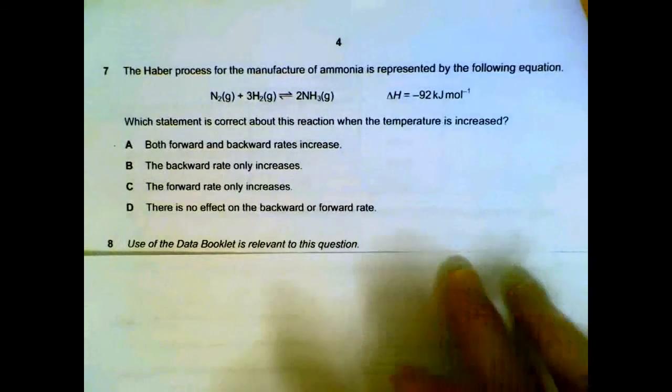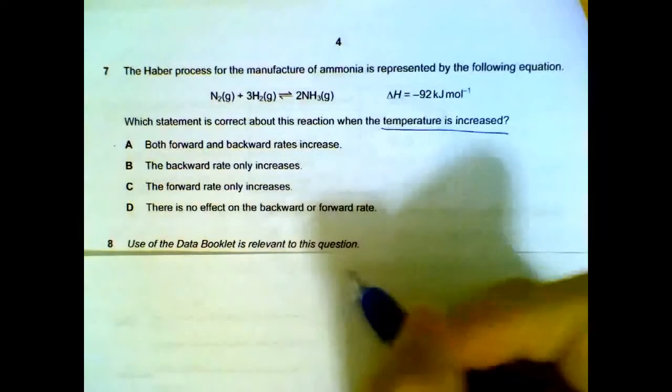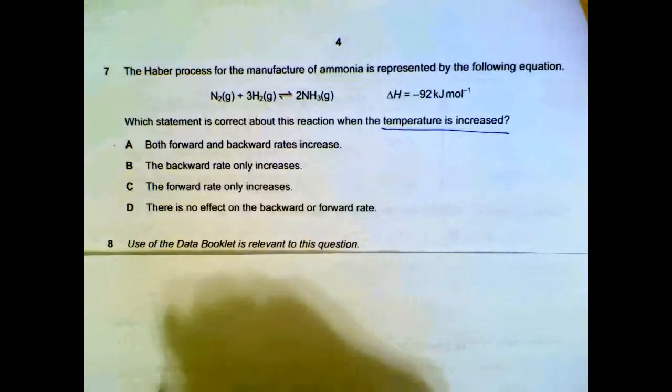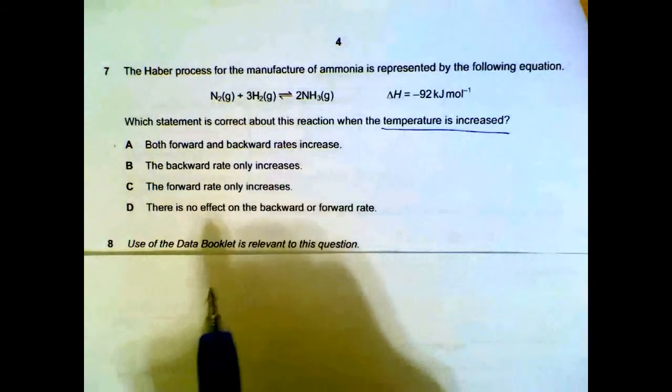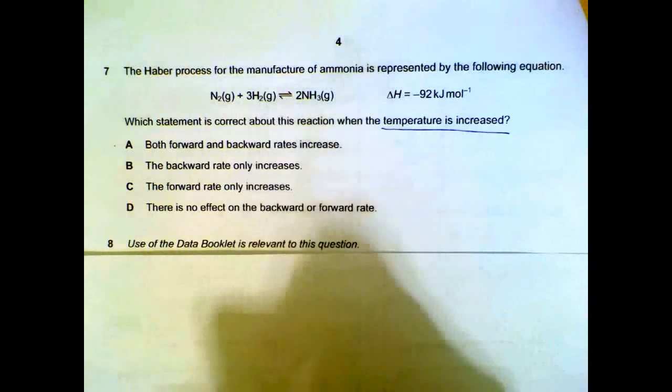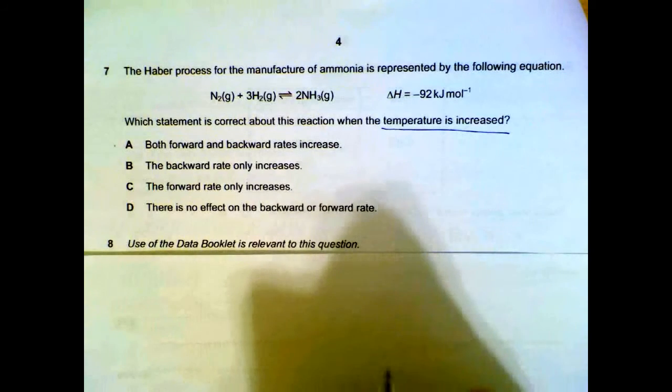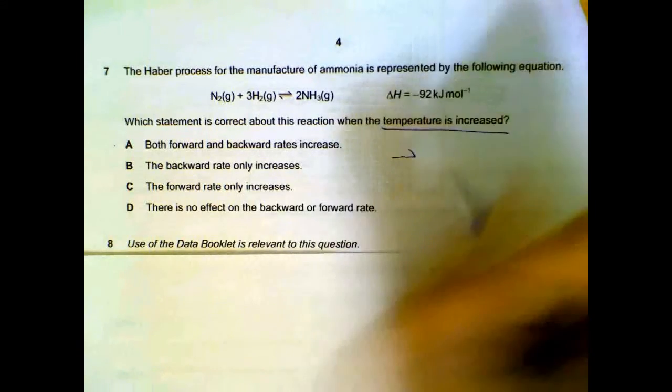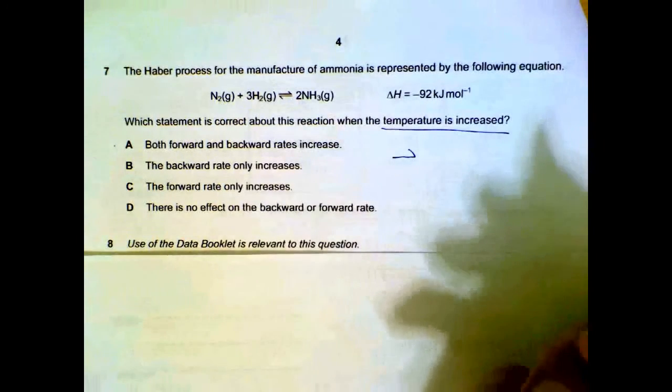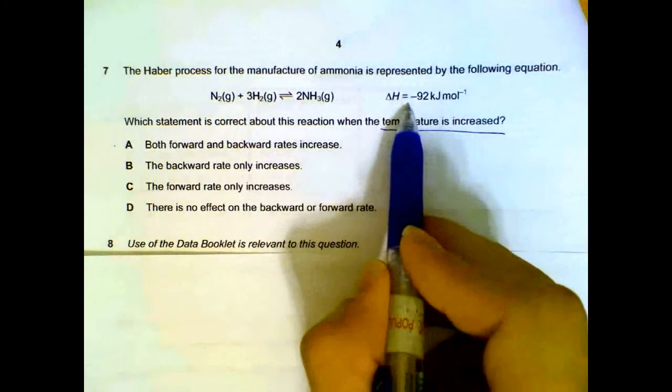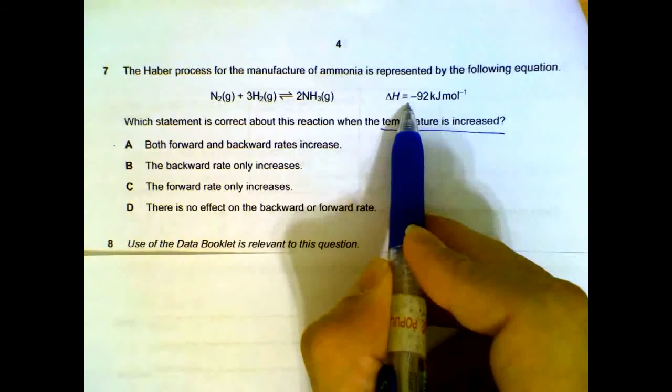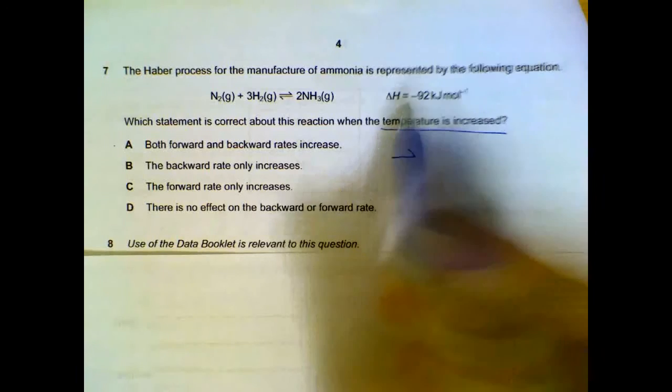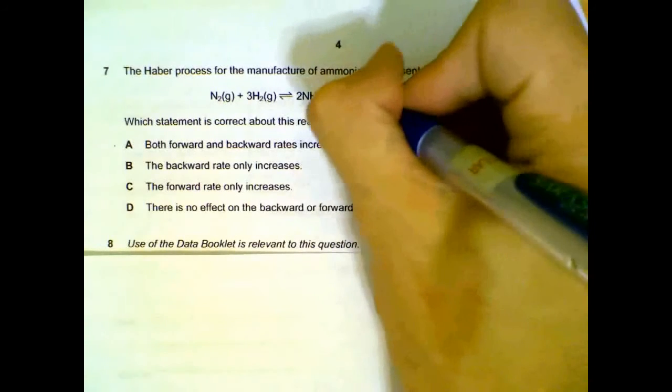Haber process. What happens when temperature is increased? When temperature increases, all the species will have higher energy. So, actually, the backward reaction and the forward reaction both should be increasing. If you're wondering why then is there a shift in equilibrium? If you look at the change in enthalpy, we can see that this is exothermic. When temperature increases, we will expect the equilibrium to shift backwards.